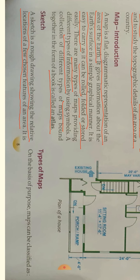A map is a flat diagrammatic representation of an area of the earth. It gives information about the earth's surface in a simple graphical manner. It is easy to carry as it can be rolled, folded, or stored easily. There are many types of maps providing different types of information by using symbols. A collection of different types of maps bound together in the form of a book is called an atlas.